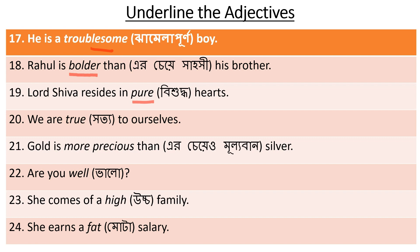Number 20: We are true to ourselves. True means shottho (honest/true). We are true to ourselves - what are we? True - 'true' is the adjective. Number 21: Gold is more precious than silver. Gold is more valuable than silver - a comparison is made between two metals. Gold is more precious than silver.